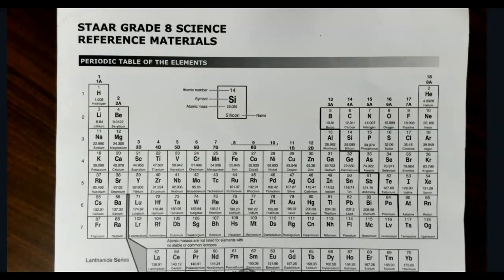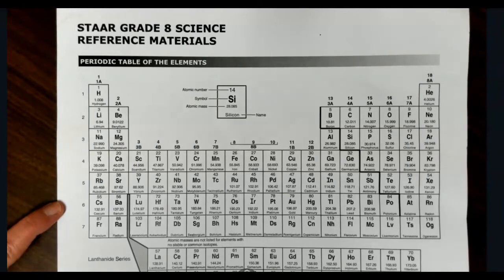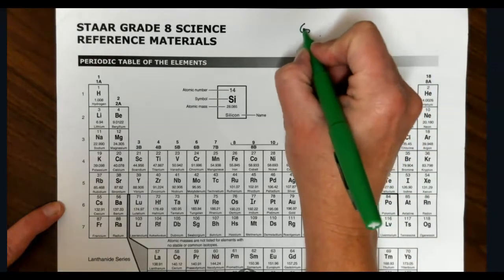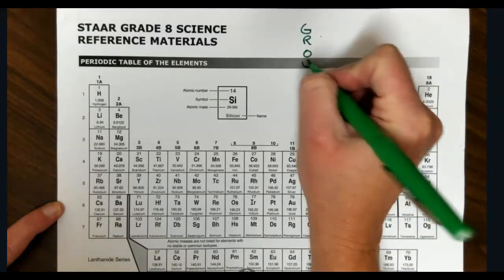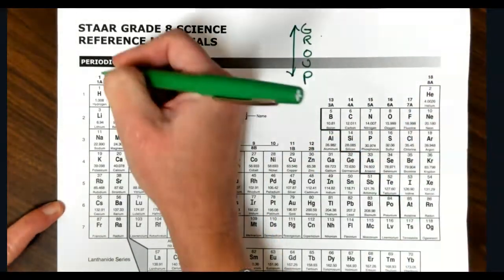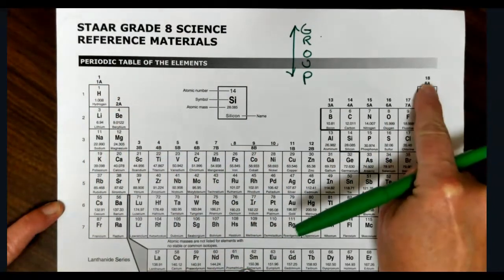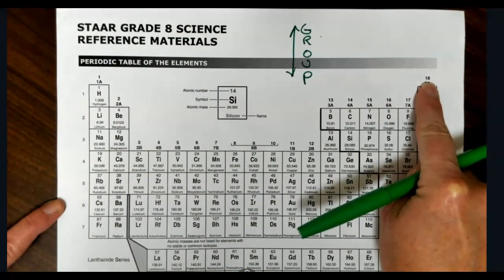So when you receive a periodic table, make sure you have a periodic table available. Remember that the periodic table is organized into groups and periods. So we would write this out as groups, because groups go up and down. They're the columns on the periodic table. There are a total of 18 groups on the periodic table.